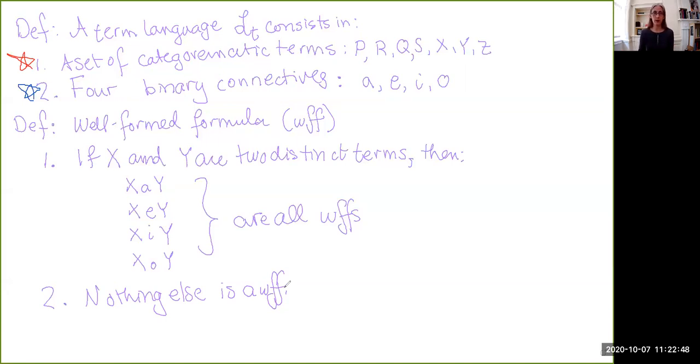Now, just to briefly remember that the way we've set this up, X here is what would correspond to the predicate of an English language sentence and Y to the subject. So X belongs to all Y and so on. So this is the language that we have and the rules for constructing grammatically correct sentences.